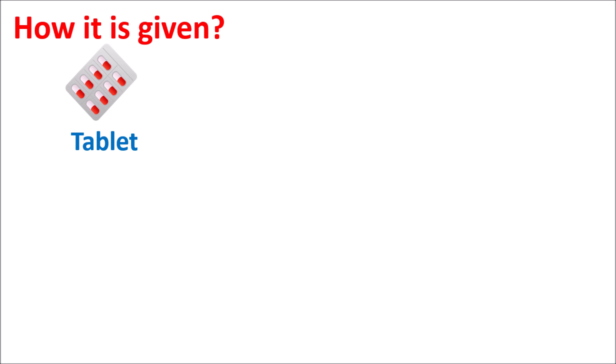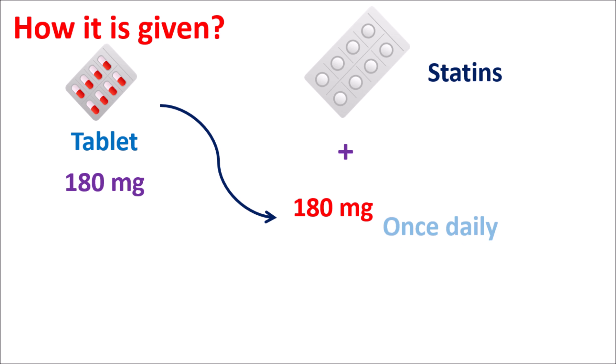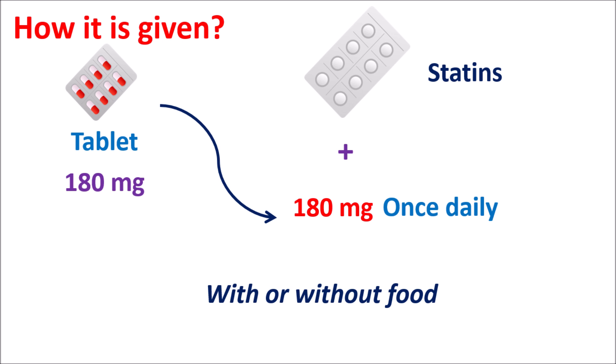How is it given? Bempedoic acid is available as a tablet at a strength of 180 mg and can be given along with statins. When combined with statins, this drug is given at a dose of 180 mg once daily. The statin should be combined at a tolerable dose because Bempedoic acid can increase the efficacy of statins. This medication can be given either with or without food.